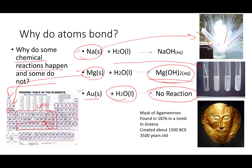This is a picture of the Mask of Agamemnon. This artifact was found in the late 1800s. We believe it was created about 3,500 years ago and it has been sitting in the ground for over 3,500 years, exposed to a lot of dirt and water, and it did not corrode, did not rust, did not change. And that's because gold is very non-reactive.